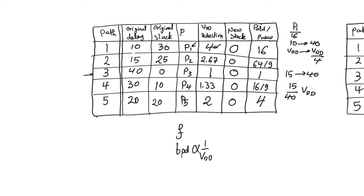What we have done here is remove all the original slacks and move into a new situation with zero slacks. This new situation treats every path as a critical path and reduces power dissipation to the minimum possible level. Positive slacks are a waste because they cause paths to finish earlier than they should, which is not desirable.